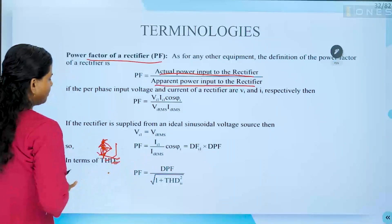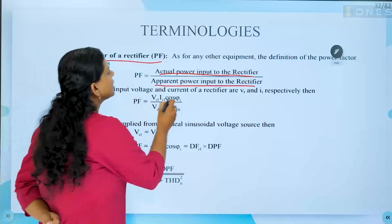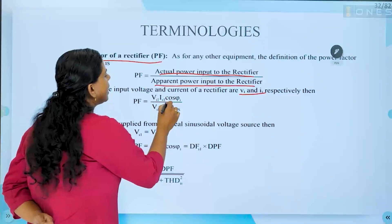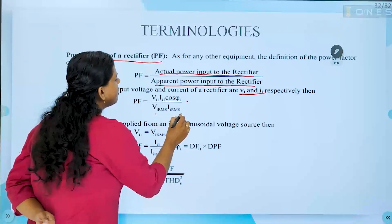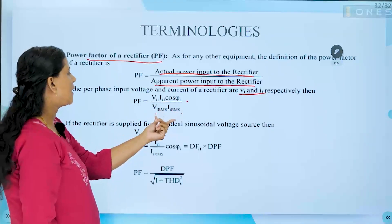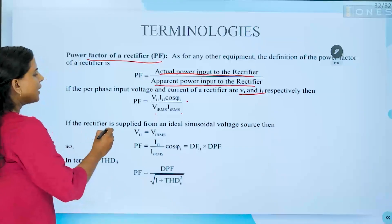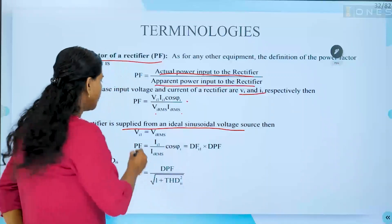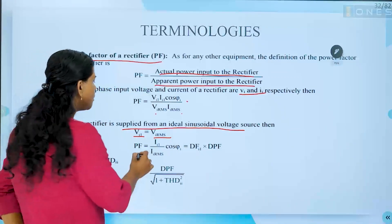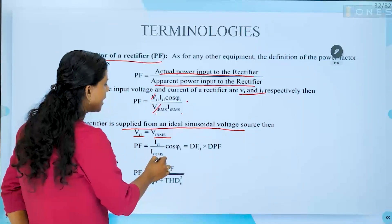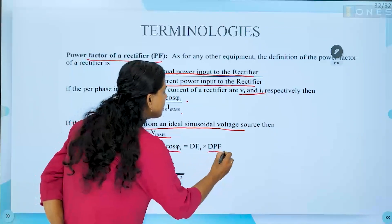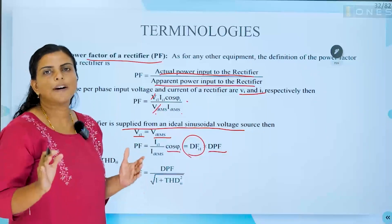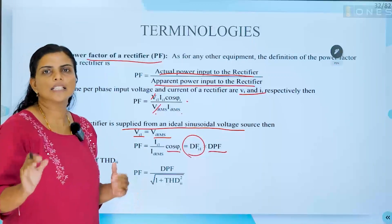Power factor indicates the useful power index. If the RMS input voltage and current of a rectifier are Vi and Ii respectively, then power factor equals (Vi1 · Ii1 · cos φi) divided by (Vi,RMS · Ii,RMS). If the rectifier is supplied from an ideal sinusoidal voltage source, the RMS value equals the fundamental value, so Vi,RMS = Vi1. The equation reduces to: power factor equals (Ii1 / Ii,RMS) · cos φi. Here, cos φi is the displacement power factor, and Ii1 / Ii,RMS is the distortion factor. So in effect, power factor is the product of distortion factor and displacement factor.